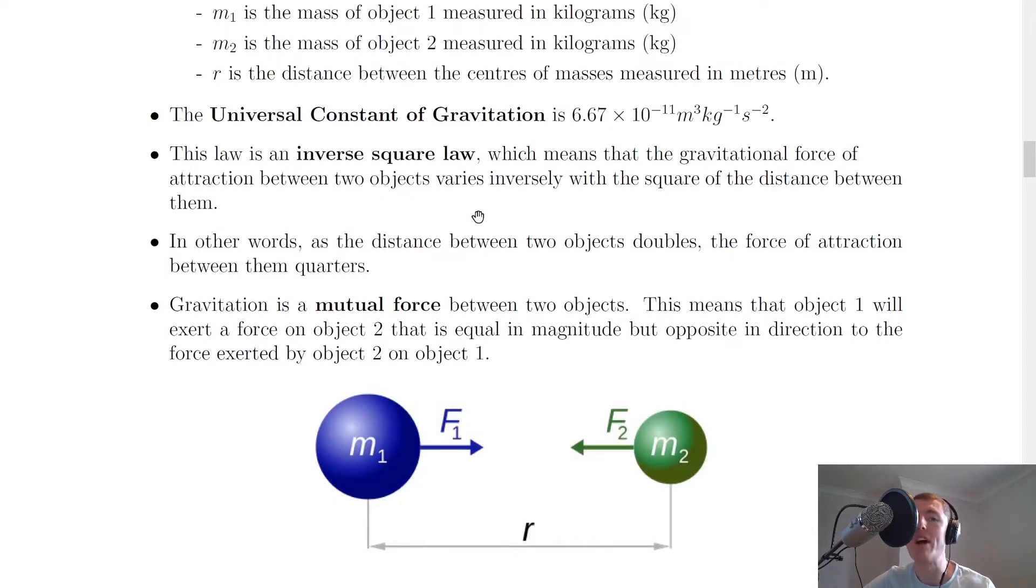This law is an inverse square law, which means that the gravitational force of attraction between two objects varies inversely with the square of the distance between them. In other words, as the distance between two objects doubles, the force of attraction between them quarters.